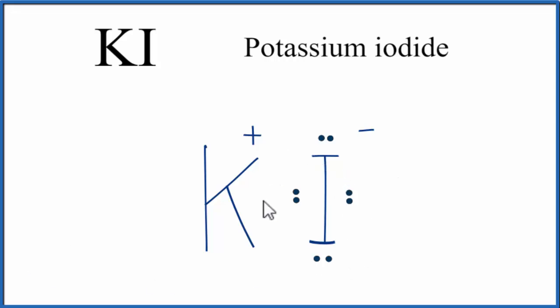Because this is an ionic bond, an electrostatic attraction, and the electrons are transferred, we need to add brackets to show that the electrons are transferred, not shared, like with a covalent compound.